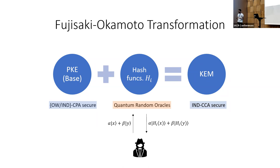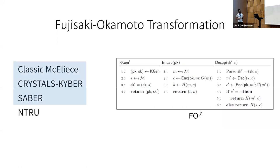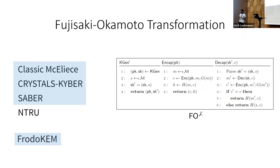Let's focus on the NIST finalists. Each of these finalists uses variants of the FO transformation to construct KEMs. More specifically, the first three candidates — Classic McEliece, Kyber, and Saber — use variants of a transformation in the literature I'll call FO. You don't have to look at how this scheme works in detail; we'll come back to it later. These three schemes use variants of this standard FO transformation to construct their KEMs. Another alternate candidate, FrodoKEM, also uses a variant of a specific FO transformation. In our work we focused on these three NIST finalists and this alternate candidate.